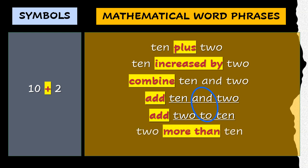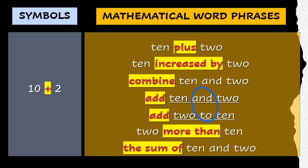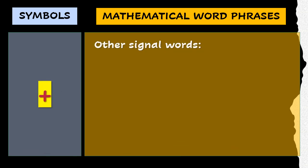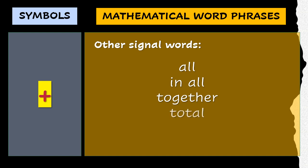More than has the same effect of switching the order of the numbers. The phrase the sum of usually requires you to enclose the numbers within a pair of grouping symbols. Other signal words for addition are all, in all, together, total, and total number.